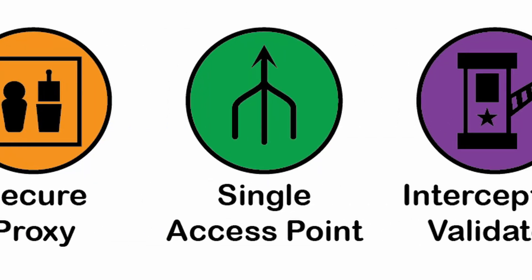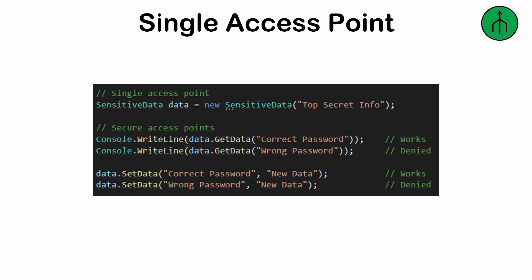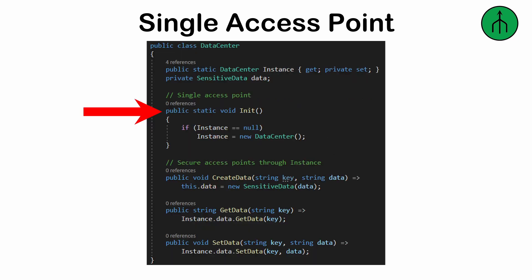Single Access Point is a design that consolidates all access to sensitive code or resources through a single, predefined entryway, eliminating backdoors. For example, a class with private fields may use public getters or setters to control access. Similarly, singleton or core patterns can centralize interactions with critical data or behaviors.